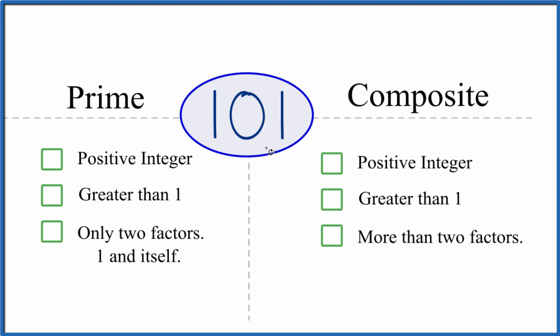So do we have a positive integer? Yeah, 101, that's a positive integer. It's a whole number. It's greater than 1.